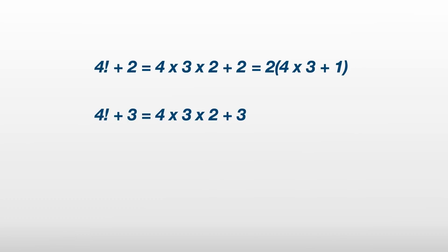With 4 factorial plus 3, we get some number that has a factor of 3, and so isn't prime. And the same idea applies to 4 factorial plus 4. We can't go any further because there's no factor of 5 in 4 factorial.